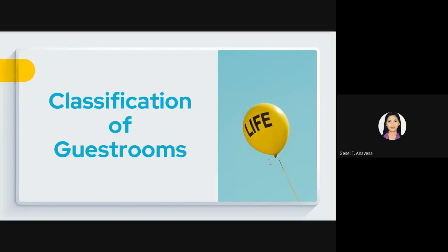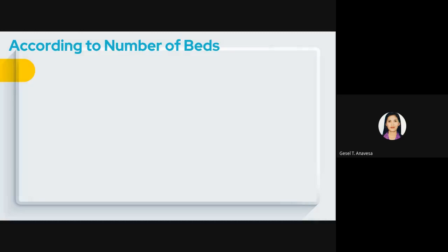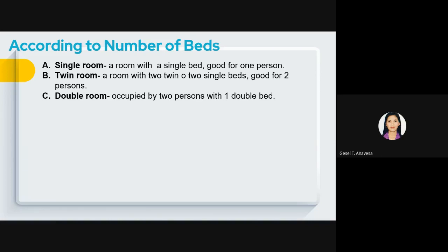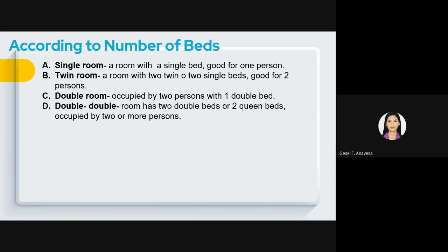Now let us proceed to the classification of guest rooms. Classification can be according to the number of beds. A single room has a single bed good for one person only. A twin room has two twin or single beds good for two persons. A double room is occupied by two persons with one double bed. A double-double room has two double beds or two queen beds, and can be occupied by two or more persons, or a family.